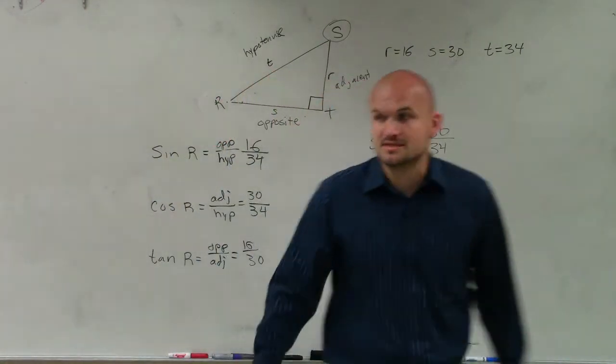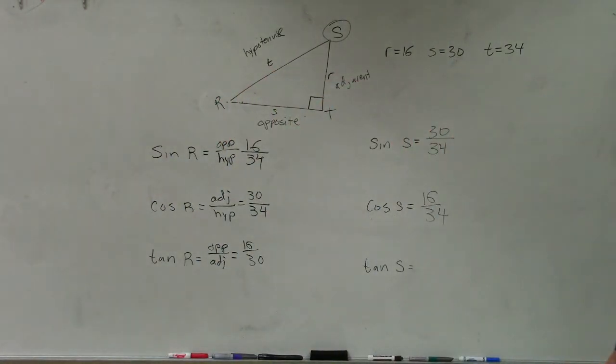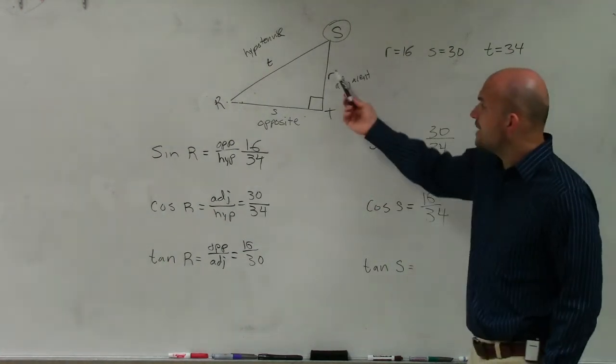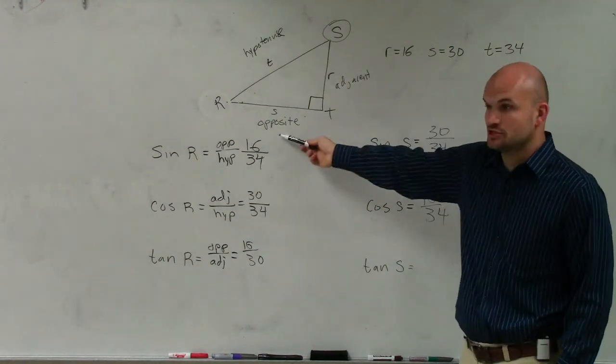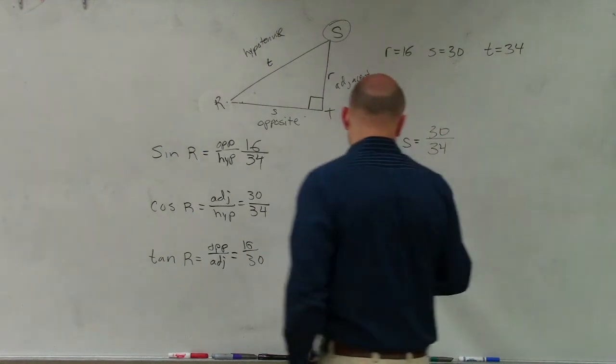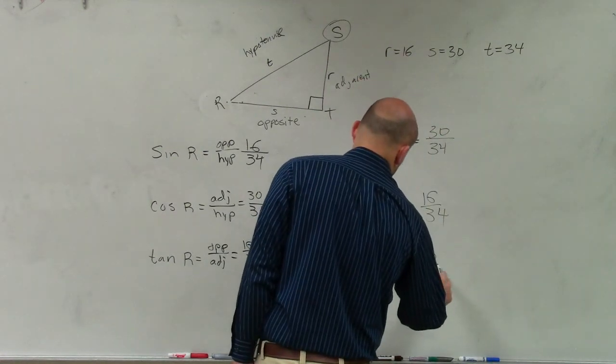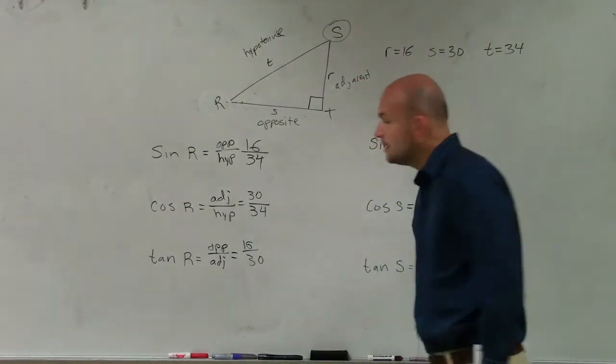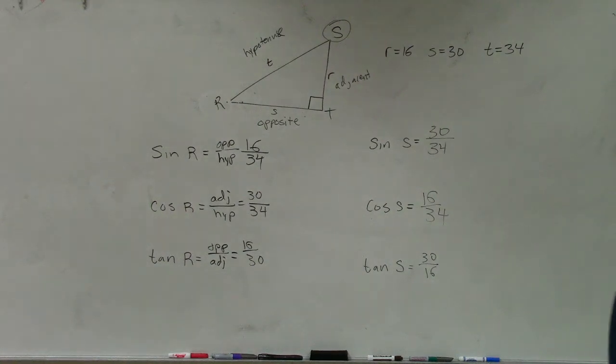And then, the tangent of s, Asia? And it's 30 over 16. Right. Because now, the opposite side is s, which is 30 over 16. And that's it. Very good. All right.